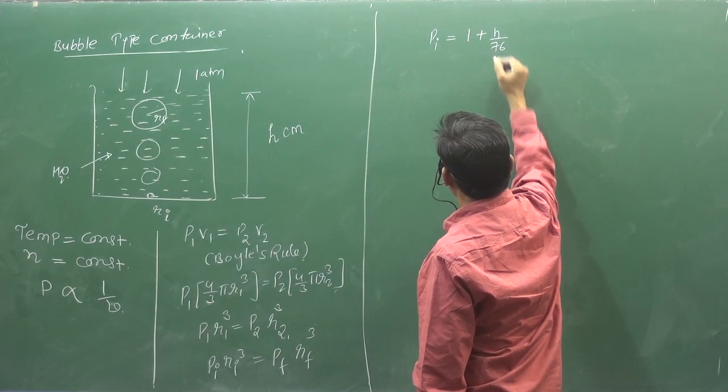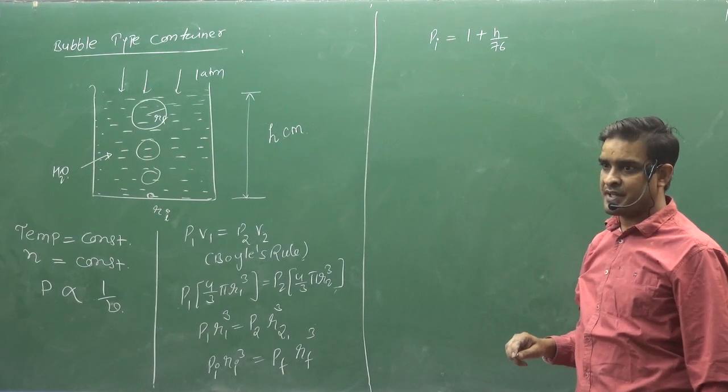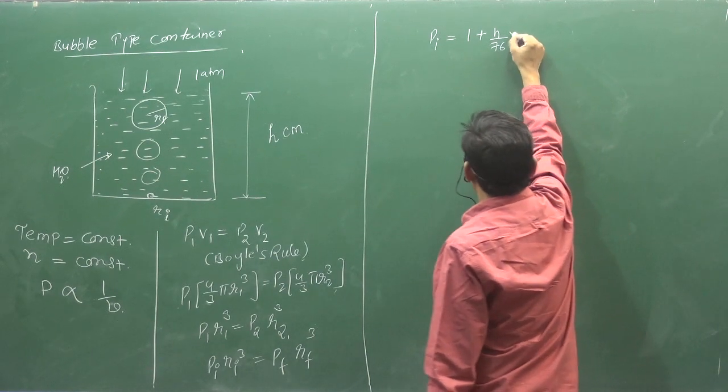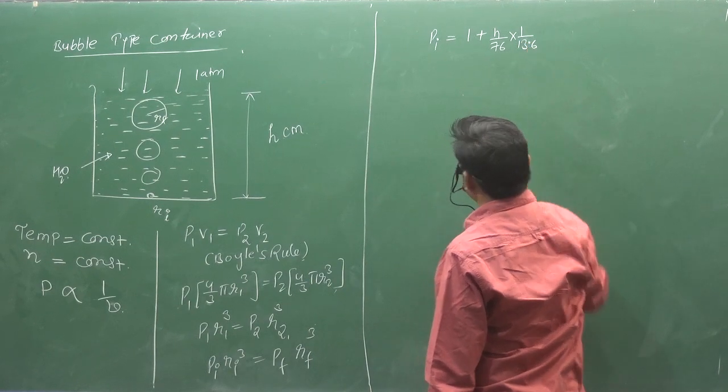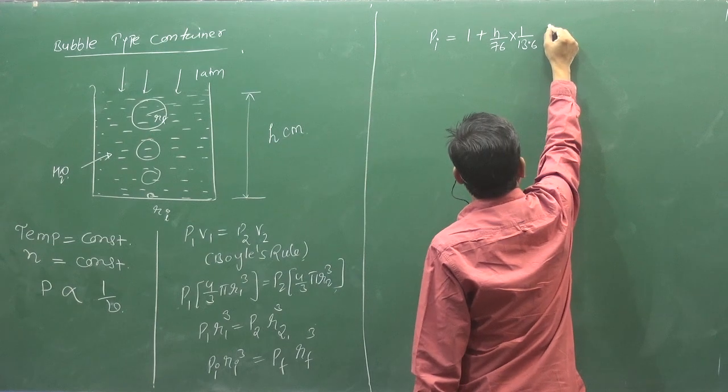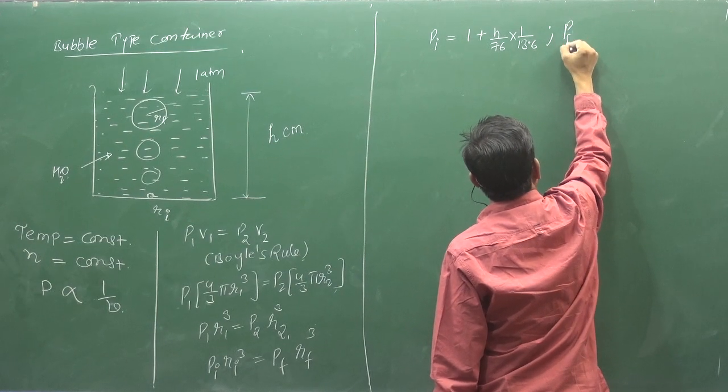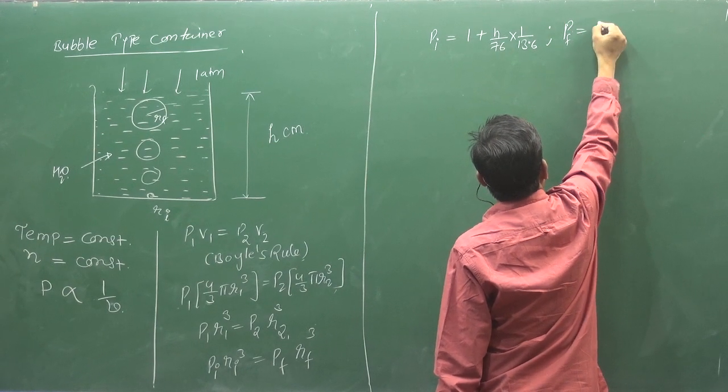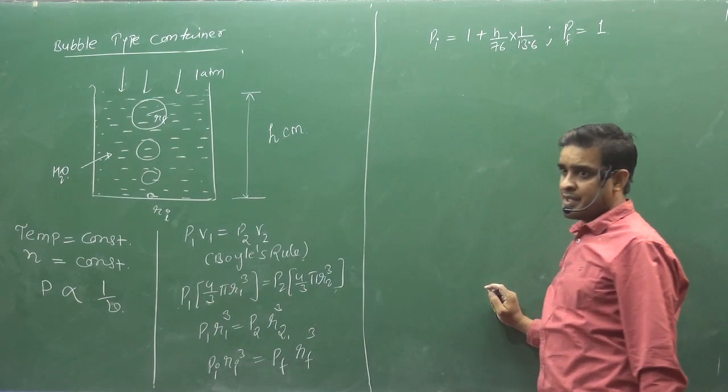H divided by 76. This seems like when mercury is in this place. But not mercury. Water is 1 divided by 13.6. This is initial pressure. How much P final is in this place? P final is 1.